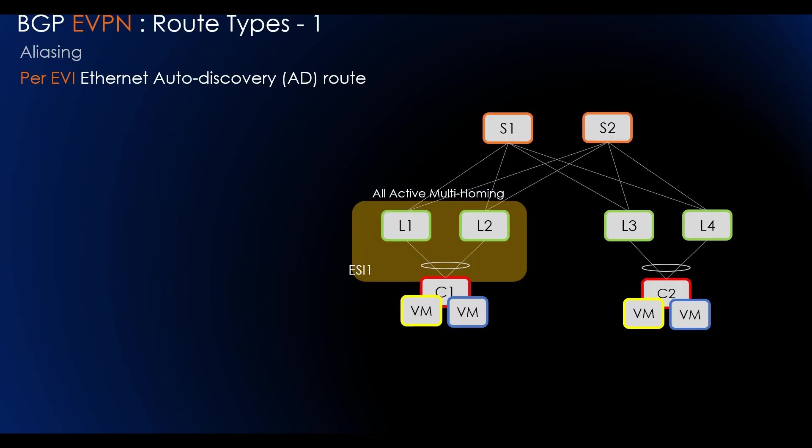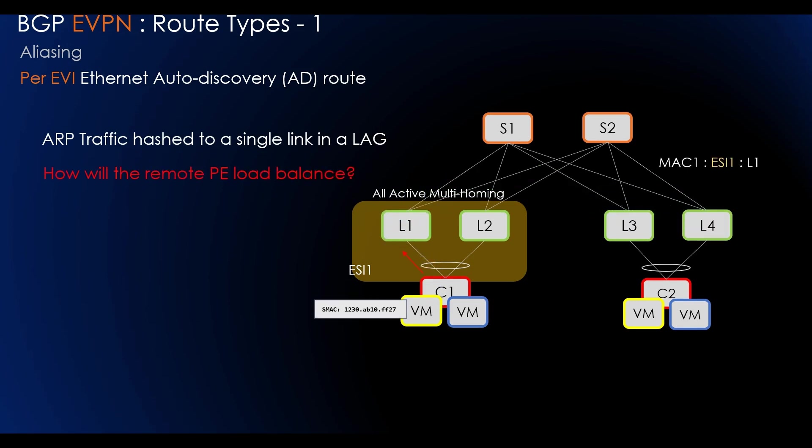Let's see the aliasing feature in EVPN. When a CE is multi-homed to multiple PE nodes using LAG with all-active redundancy, and the PE relies on control plane learning, when CE1 sends an ARP and it gets hashed to a single link in a LAG and then the MAC address gets advertised to the other leaves, how will the remote PE load balance in this case?